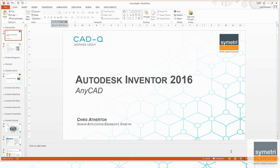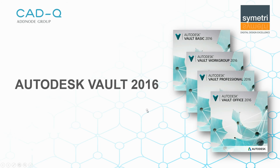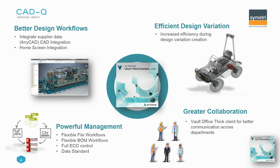So let's take a look at Vault. We've got Vault Basic which comes with Inventor, Vault Workgroup as an intermediate product, Vault Professional as the top-end product, and Vault Office for non-CAD users. Inside all these releases of Vault, in particular Vault Professional, there were a variety of changes in 2016: the ability to do a new type of copy design, a new Vault Office Thick Client, the ability to customize and define item workflows, ECO control for file management, and AnyCAD data now integrating with Vault as well.